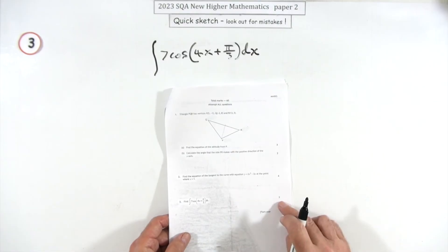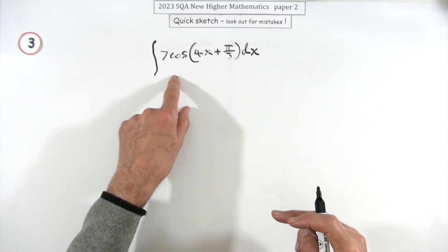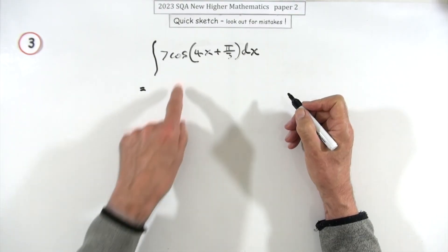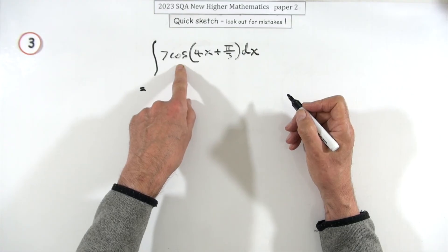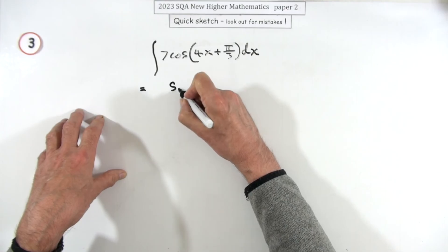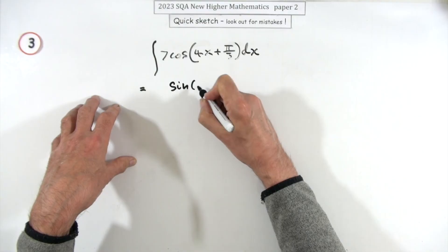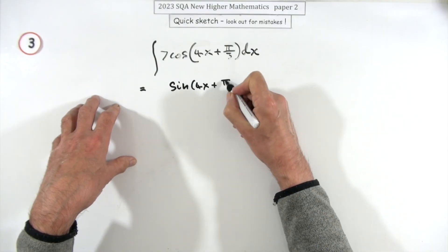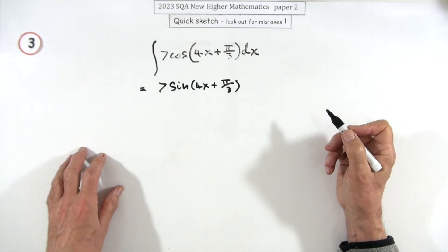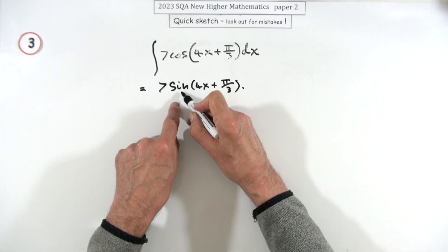Number three, for two marks, carry out this integration. It might look scary because of the cosines and the pis in it, but there's really not a lot to it. You just need to see what would differentiate to produce a cos. That would be a sine. It would produce a positive cos, so all is fine of whatever. And the coefficient of course just remains the same.